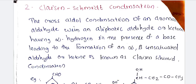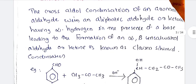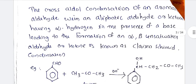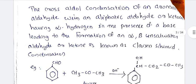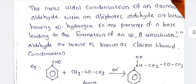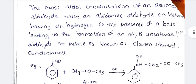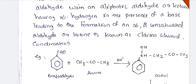In cross aldol condensation, an aromatic aldehyde is reacted with an aliphatic aldehyde or aliphatic ketone to form an alpha, beta unsaturated carbonyl compound. That is why we call it the Claisen-Schmidt condensation. Condensation means addition and elimination — that is why we have a condensation reaction.